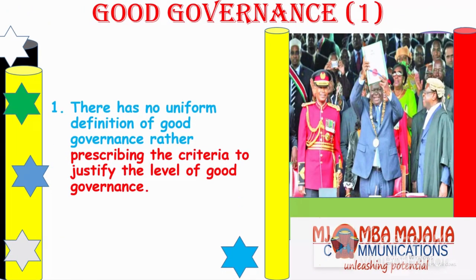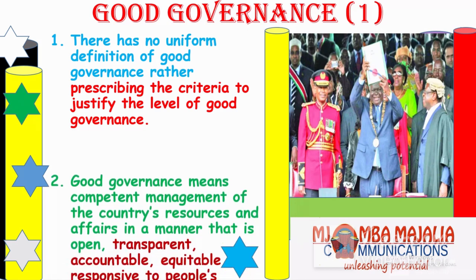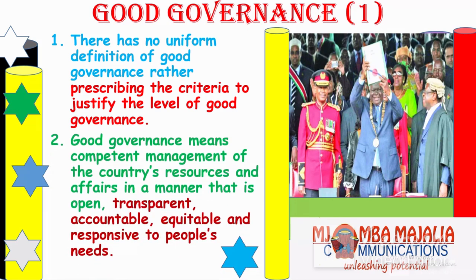The first aspect of good governance: the 2010 Constitution has very many good aspects, and one of them is good governance. While there's no uniform definition of good governance, there is criteria to justify its level. Good governance means competent management of a country's resources and affairs in a manner that is: open, transparent, accountable, equitable, and responsive to people's needs.